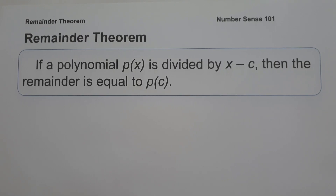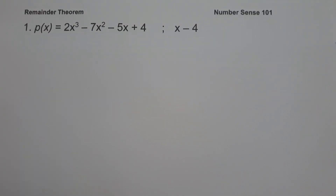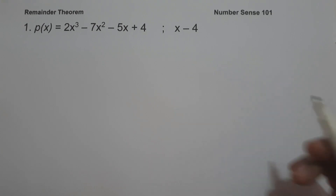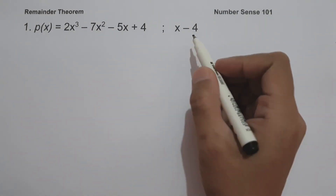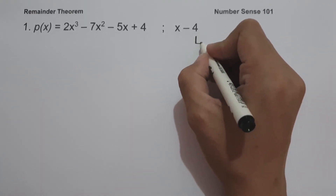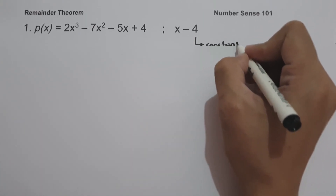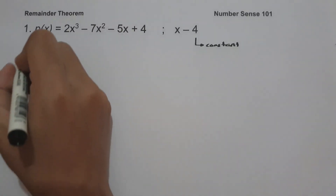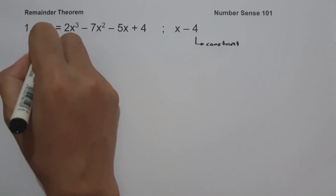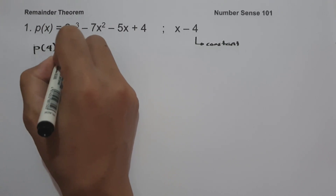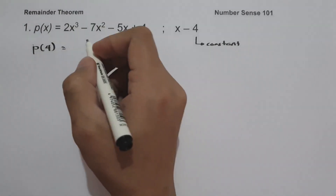Let's start and have an example. On the first example, we have p of x equals 2x cubed minus 7x squared minus 5x plus 4, and our divisor is x minus 4. Since our constant is negative 4, we are going to take the opposite sign of our constant, and that is positive 4. We will substitute this to the value of x.